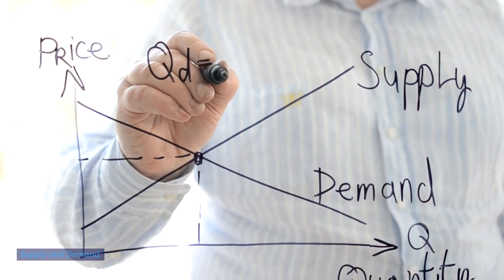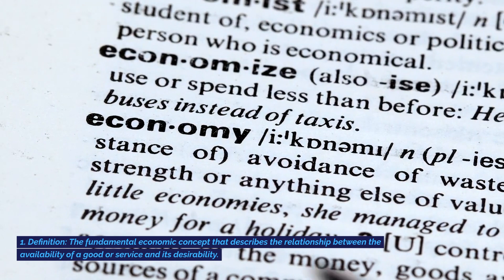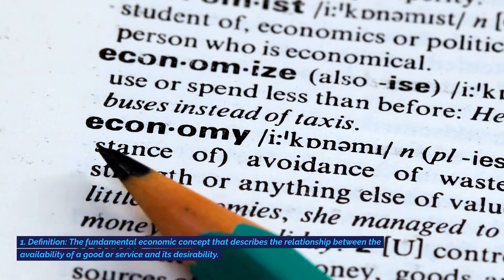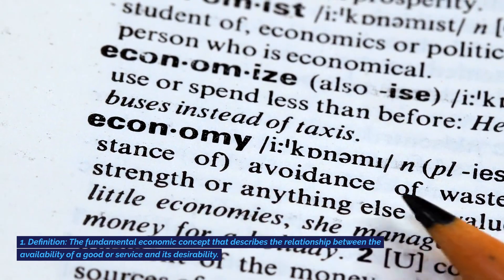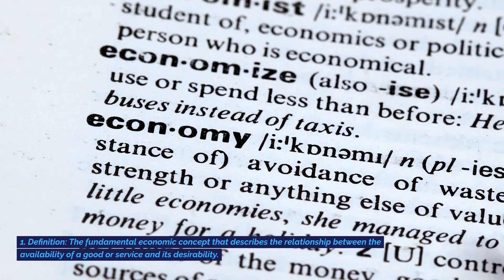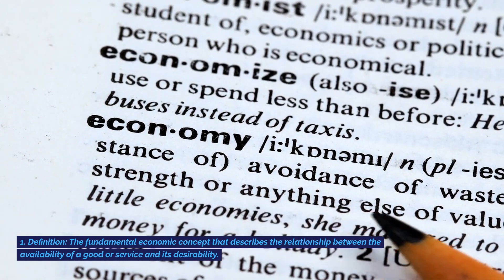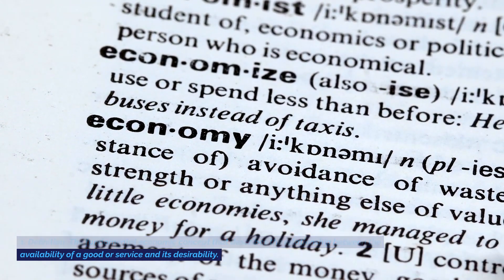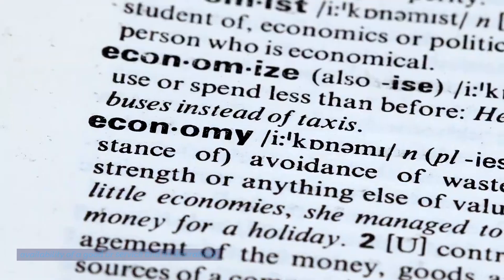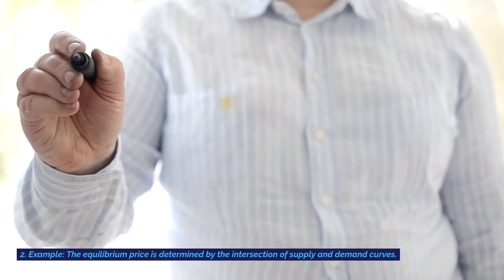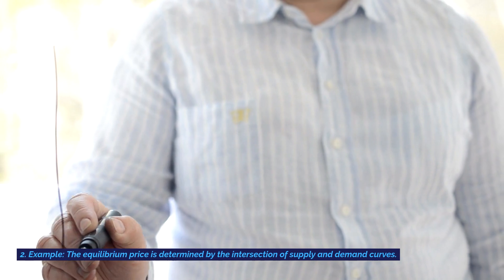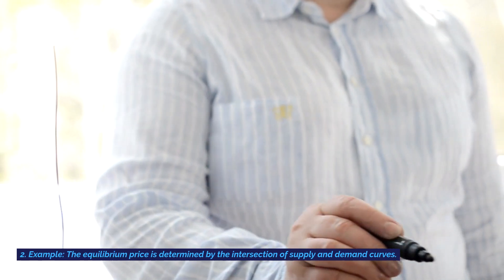Supply and demand. Definition: the fundamental economic concept that describes the relationship between the availability of a good or service and its desirability. Example: the equilibrium price is determined by the intersection of supply and demand curves.